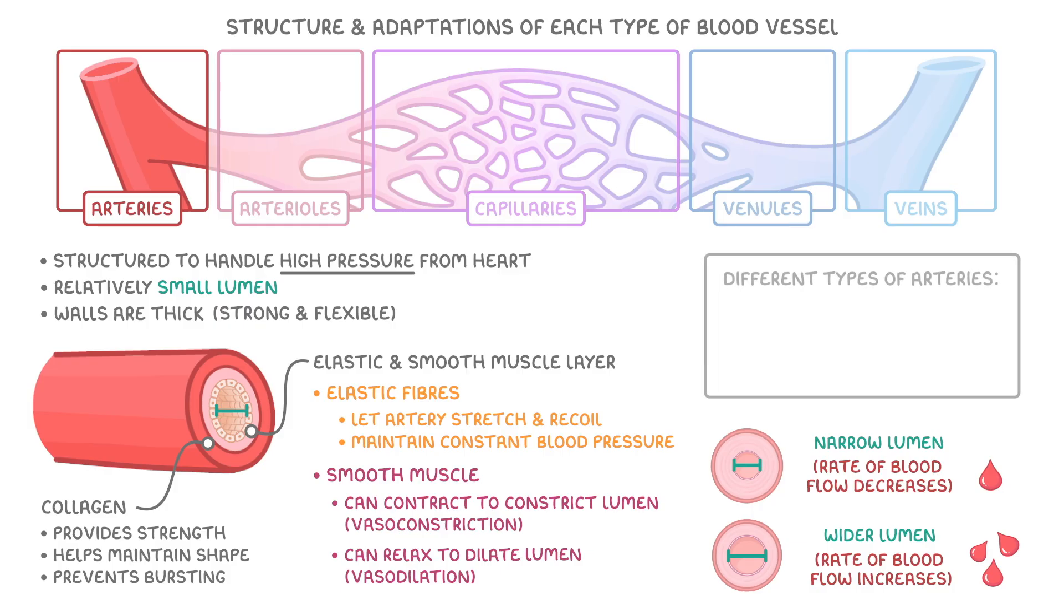We can distinguish between different types of arteries depending on what their wall is made up of. For example, elastic arteries have more elastic fibers which allows them to stretch and accommodate the surge of blood that comes with each heartbeat, whilst muscular arteries have more smooth muscle, which means they can regulate blood flow as it travels throughout the body.